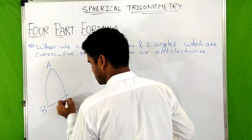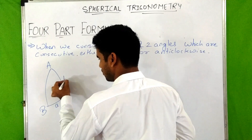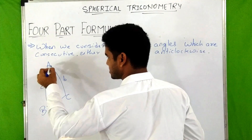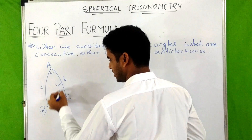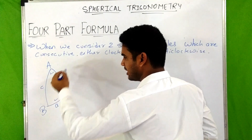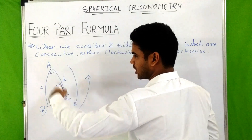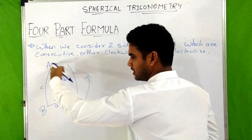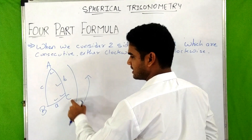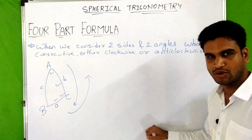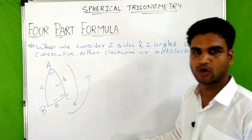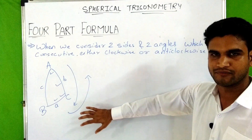For example, consider a spherical triangle ABC. The sides are small a, small b, and small c. We take four consecutive parts. If you go clockwise: capital A, small b, capital C, small a — they are clockwise. Anti-clockwise: capital A, small a, capital C, small b — also consecutive. So the condition is four consecutive parts of a spherical triangle.